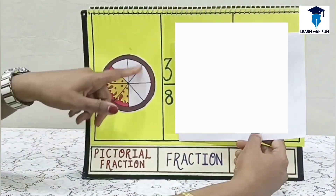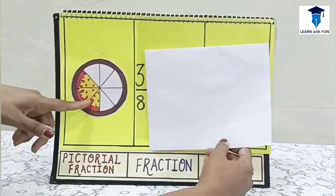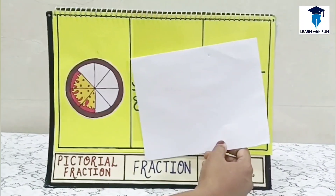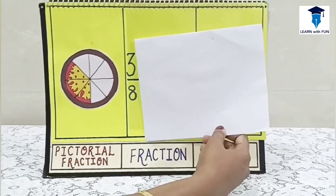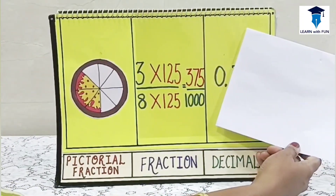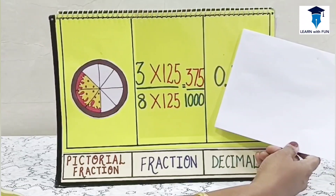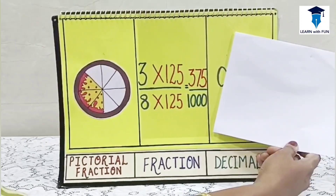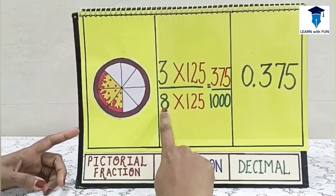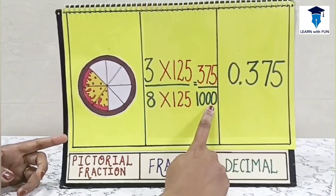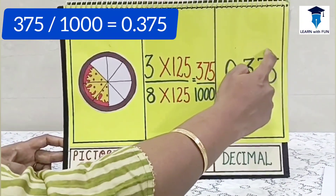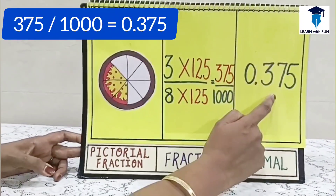Now this is something a little tricky. There are 8 pieces of pizza and 3 are left, so the fraction is 3 upon 8. This cannot be simply converted in terms of 10 or 100. In the simplest way, it should be in terms of 1000, since 8 × 125 = 1000. So 3 × 125 = 375, giving us 375 upon 1000. Since there are 3 zeros at the denominator's place, the decimal point shifts 3 places from the right, giving the answer 0.375.